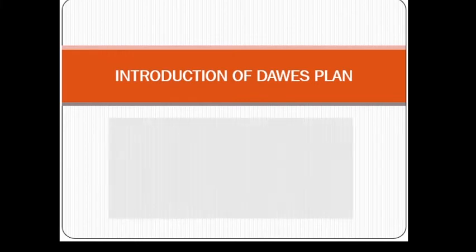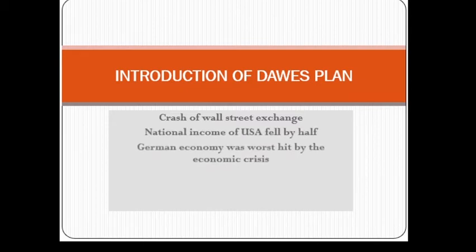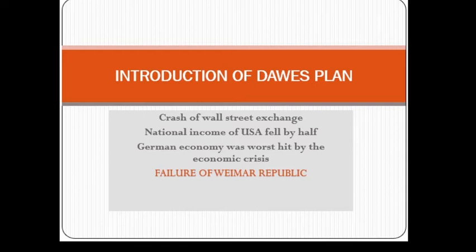The crash of Wall Street exchange caused the national income of the USA to fall by half. The German economy was worst hit by this economic crisis. People of Germany were going through a great crisis at that time, and because of the crash of Wall Street exchange, their economy worsened. The Weimar Republic also failed to help Germany because of this reason. Let us see what happened to Germany during the years of the Great Depression.